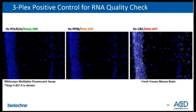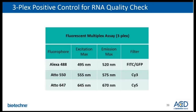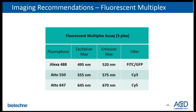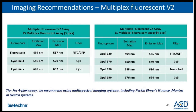With any new samples you are working with, we always recommend running the three-plex positive control to check RNA quality. Here is an example of the expected positive control staining in each channel when sample RNA has been preserved well. Microscope and image acquisition play an important role in the success of RNA scope fluorescent assay. This slide summarizes our recommended filter settings for fluorescent multiplex assay, and here are our imaging recommendations for the V2 assay. For a four-plex assay, we recommend using a multi-spectral imaging system — in-house, we use Nuance.